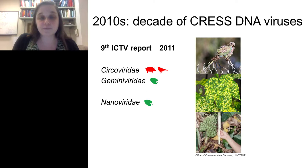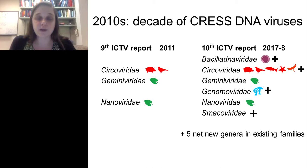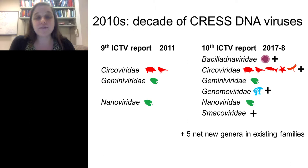Clearly these diseases can have substantial economic impacts on the crops in which they occur. Comparing the diversity we had in 2011 to today, when the 10th ICTV report is still in progress, we have doubled the number of families and have a net number of five new genera in existing families, and we still haven't systematized a great diversity of CRESS DNA viruses discovered in the last decade.